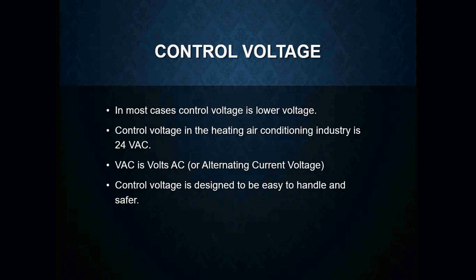VAC, which stands for volts AC, or alternating current voltage, is a term you will commonly see. On many transformer nameplates you will see 120 VAC or 24 VAC — that's just telling us the voltage being used and confirming that it's alternating current. Control voltage is designed to be easy to handle and is obviously a little bit safer for us to handle.